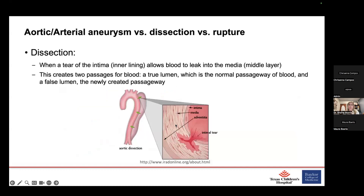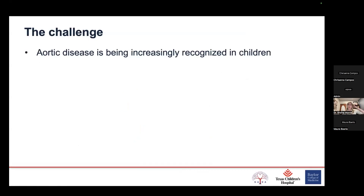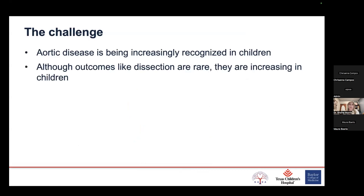A dissection creates two pathways of blood flow, which can cause a risk of rupture of the wall and can also occlude blood flow to the aorta or small vessels, causing stroke-like symptoms or lack of blood flow to certain organs — that's what we're trying to prevent even in kids. While rare in children, it certainly can happen. Aortic disease is being increasingly recognized in kids due to better genetic testing and more community awareness. And even though outcomes like dissection are rare, dissections are actually increasing — likely because we're now recognizing cases that previously went unidentified.